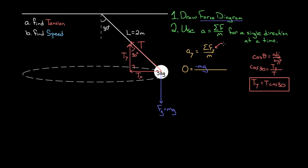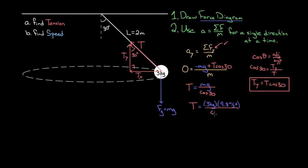This vertical component T·cos(30°) is what I plug into the net vertical force. Since ay = 0, multiplying both sides by m gives 0 = T·cos(30°) − mg. Solving: T = mg/cos(30°). Plugging in numbers — mass is 3 kg, g is 9.8 — gives a tension of about 33.9 Newtons, which I'll call 34 Newtons. That's the tension in the rope.